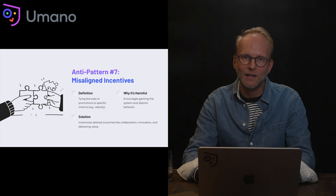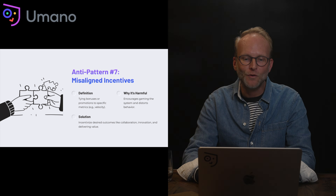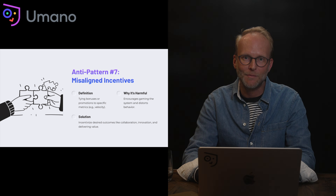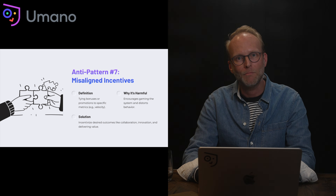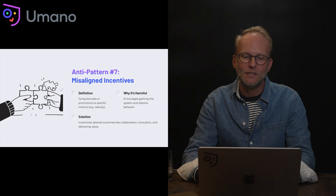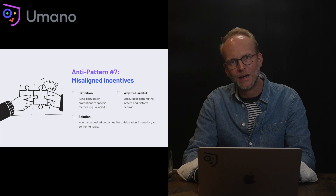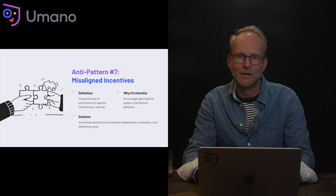Anti-pattern seven: misaligned incentives. This involves tying bonuses to particular metric outcomes such as velocity. It's harmful because it encourages gamification and undermines the overall health of a team working collaboratively, distorting behavior by focusing only on metrics tied to the incentive. The solution is to incentivize desired outcomes across a number of different metrics — focusing on outcomes rather than outputs such as collaboration, innovation, and ultimately the value the team delivers for their customers.